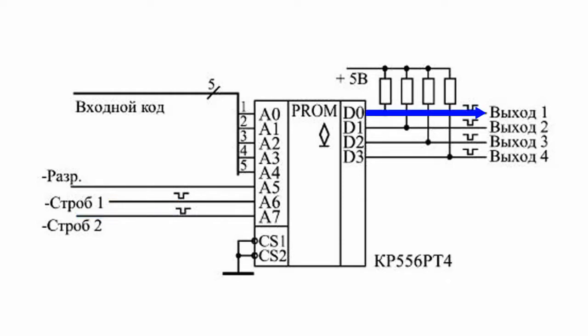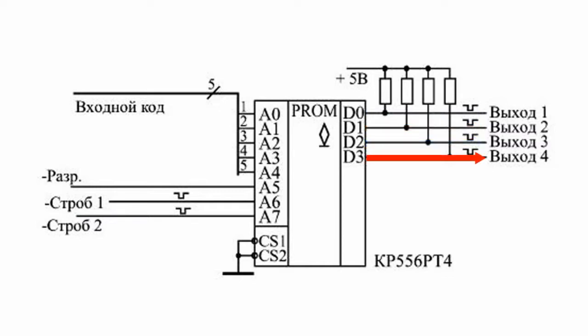The D0 memory data output is used for output signal 1, D1 for output signal 2, D2 for output signal 3, and D3 for output signal 4.